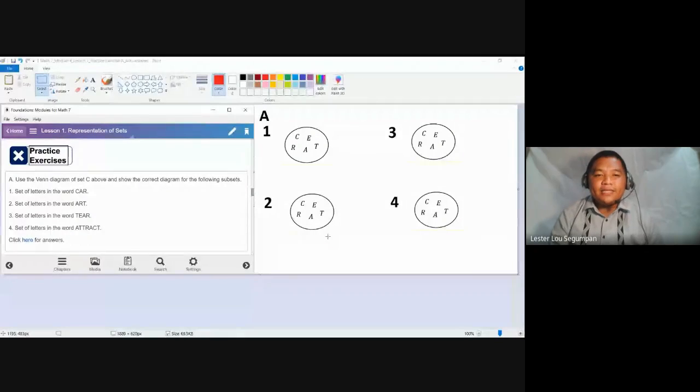So we are going to answer or determine the subsets or show the subsets in this Venn diagram. Number one, set of letters in the word car.